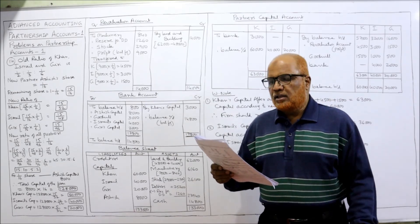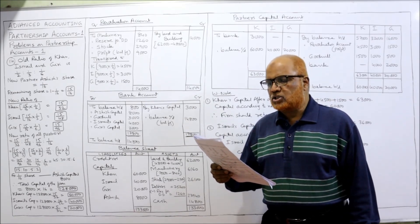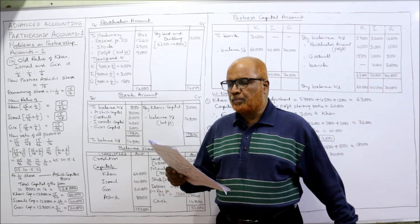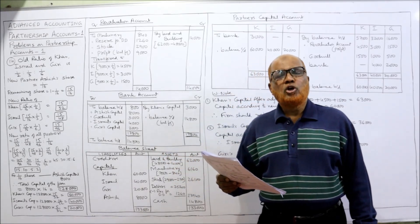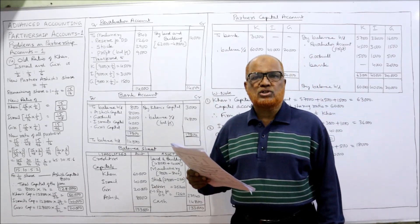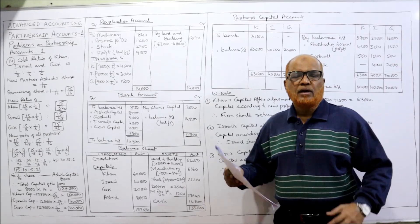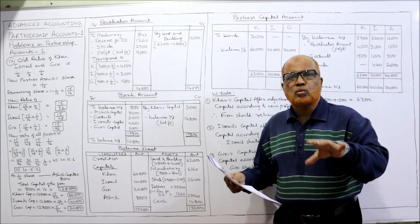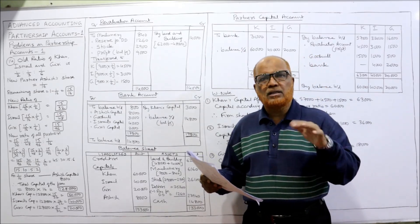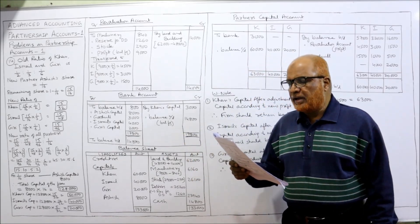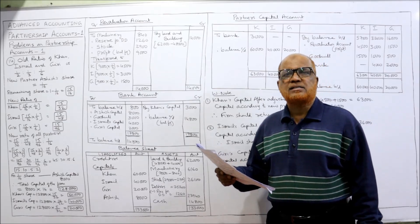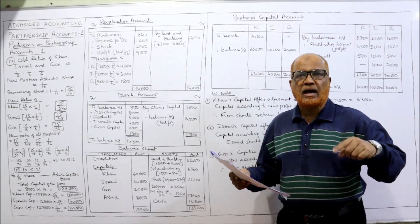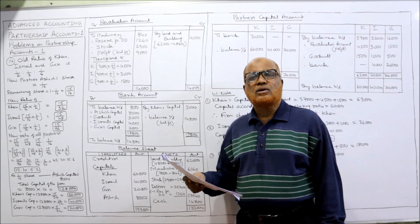They agreed to take Ashish into partnership as from 1st January 2005, giving him one-sixteenth share in the profits on the following terms. The new partner is Ashish, and he is allowed one-sixteenth share in the whole profits. One-sixteenth profit goes to Ashish; the remaining profit will be shared by the old partners in the old ratio. Ashish should bring in 3,000 as goodwill and 8,000 as capital.